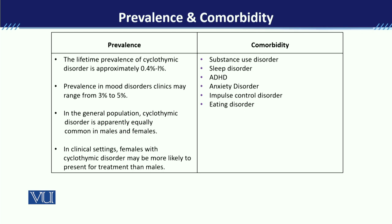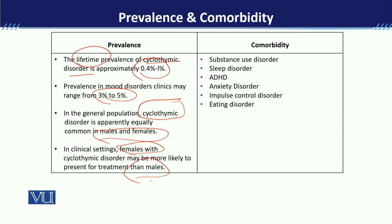Cyclothymia's lifetime prevalence is 0.4 to 1 percent. Among mood disorders reported in clinics, it accounts for 3 to 5 percent — noting that this includes all mood disorders, not only Cyclothymic Disorder. In the general population, Cyclothymia is observed equally in males and females, but in clinical settings, females seek treatment more than males.